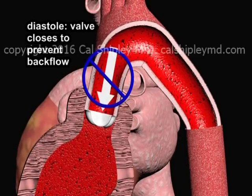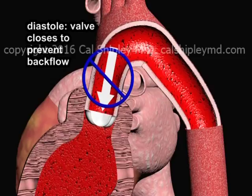During the phase of the cardiac cycle known as diastole, the left ventricle relaxes and refills with blood coming from the left atrium. The aortic valve closes during diastole to prevent backflow of blood from the aorta into the left ventricle.